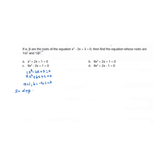Sum of the roots: alpha plus beta equals minus b by a, that is minus into minus 2 divided by 1, which gives plus 2. Product of the roots: alpha beta equals c by a, that is 3 by 1, which is 3.